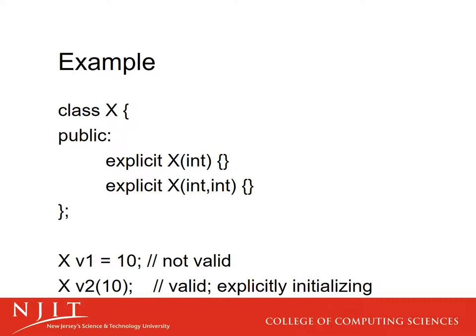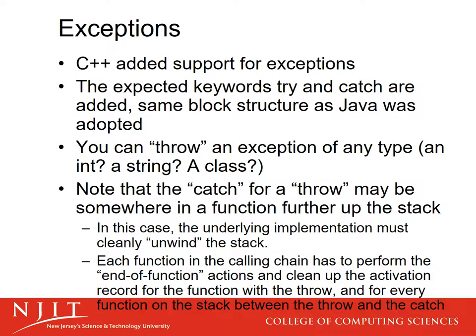Sometimes things get added to a language because we like them from another language — exceptions are a good example. Exceptions work well in Java and C++ added support for them in nearly the same way: try and catch. There's a try block and a catch block for handling exceptions. In Java, an exception must be an object. In C++, you can throw anything — an integer, a string, an instance of a class.